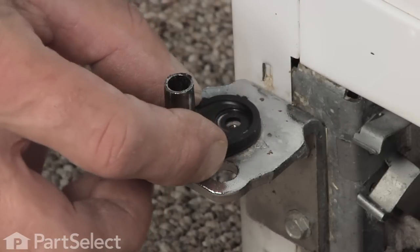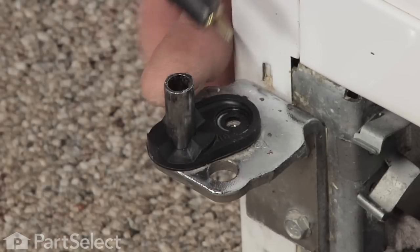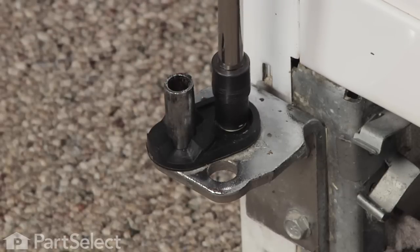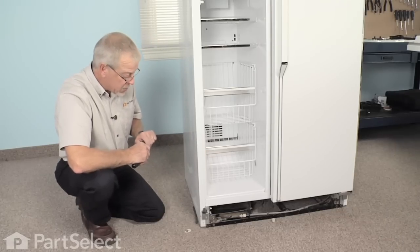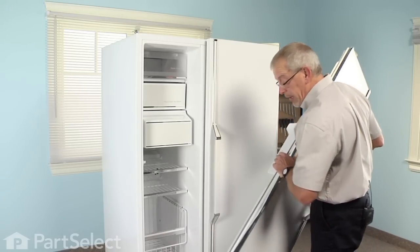Line up the screw hole, replace the screw with the one supplied with the kit, tighten it in place. Now we're ready to set the door back onto the hinges. Now that we have both cams installed we're ready to put the door back on.